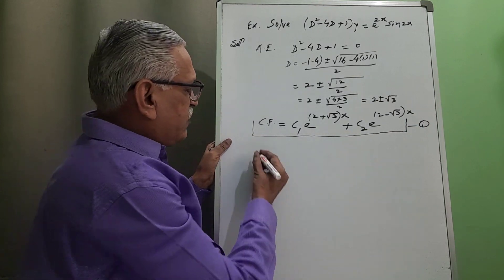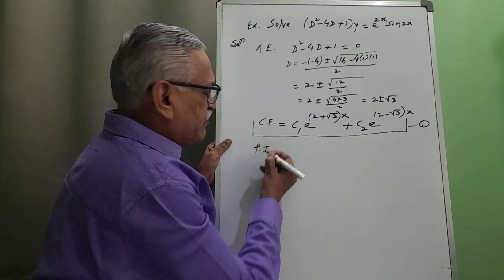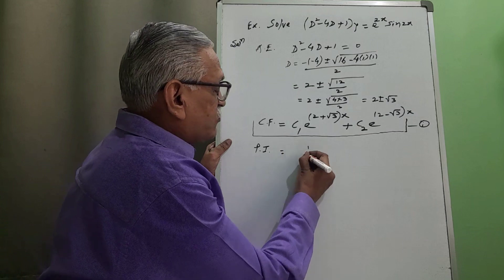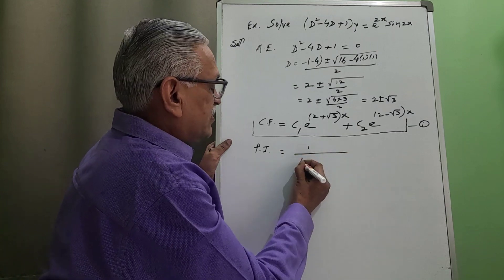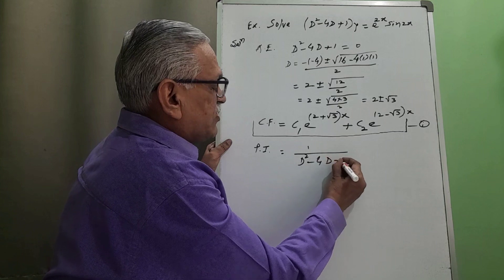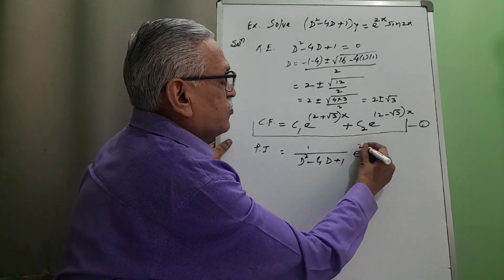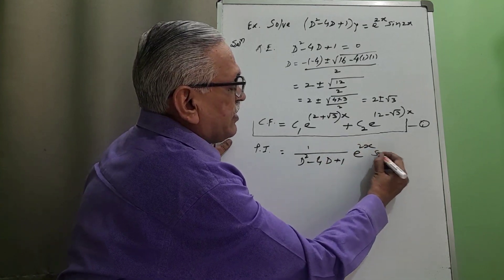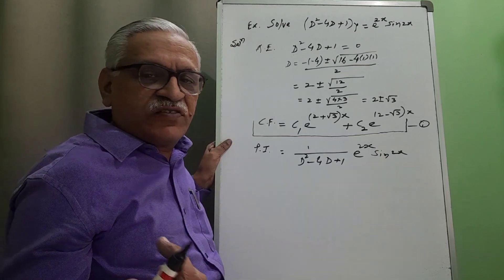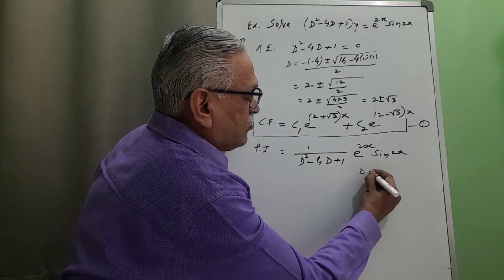Then we require to find PI, the second part of the solution. It is by the inverse operator technique: one over (D squared minus 4D plus 1) operating on e raised to 2x multiplied by sine 2x. As it is in the form of e raised to ax into V, we apply the exponential shift rule.